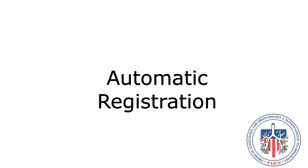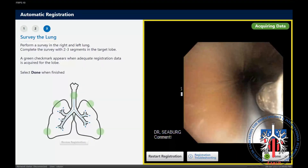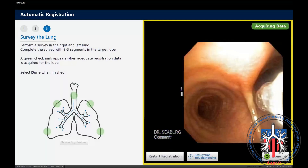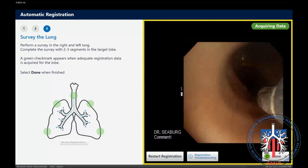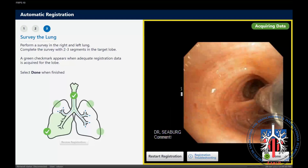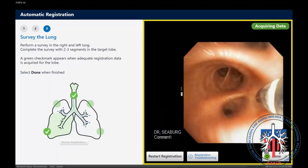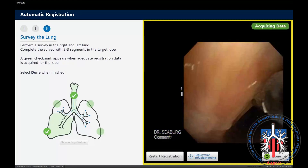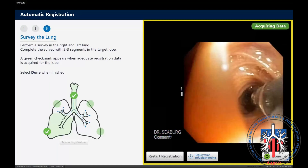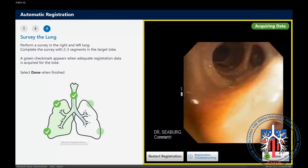Automatic registration does not require additional planning or setting of anatomic locations within the tracheobronchial tree. Automatic registration begins just as manual registration does, in the mid-trachea with the locatable guide approximately 5 mm past the tip of the working channel of the bronchoscope. The bronchoscope is then passed up and down the trachea or endotracheal tube and advanced into the segments of the bronchi until a green checkmark is achieved on the lung survey diagram, denoting that the computer has identified the airways.